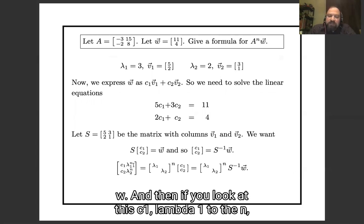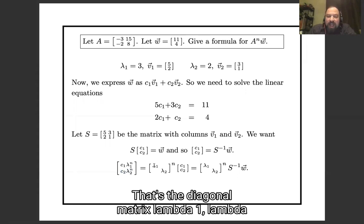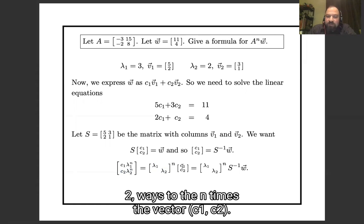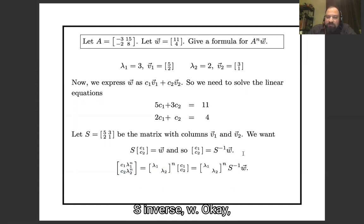And then if you look at this c₁λ₁ⁿ and c₂λ₂ⁿ, which appeared in our previous formula, that's the diagonal matrix [λ₁, λ₂] raised to the n times the vector [c₁, c₂]. And we just saw that [c₁, c₂] is going to be S⁻¹w.